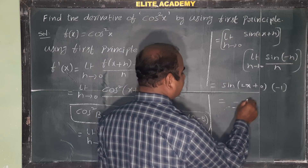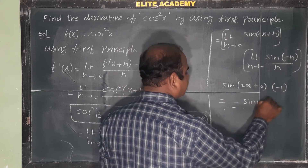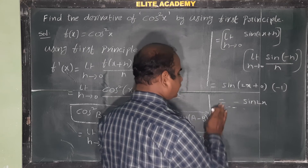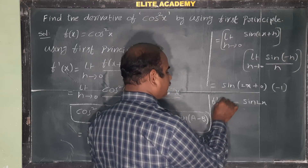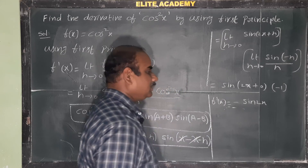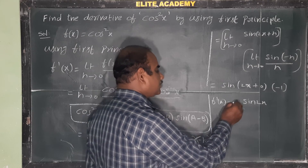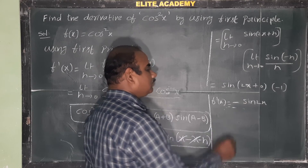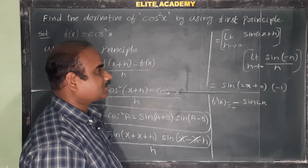Finally, substituting h tends to 0, sin(2x+h) becomes sin(2x), and the limit of sin(-h)/h gives -1. Therefore, f'(x) = -sin 2x. This is the derivative of cos²x using the first principle.